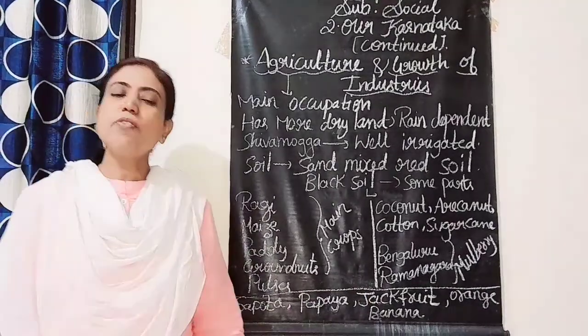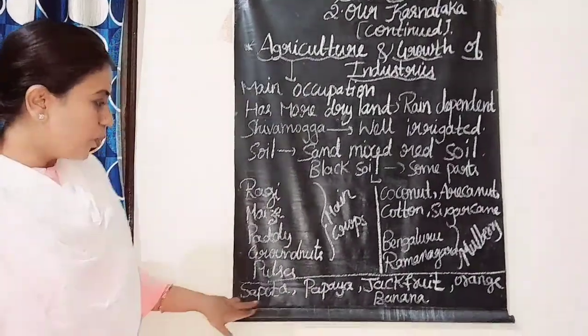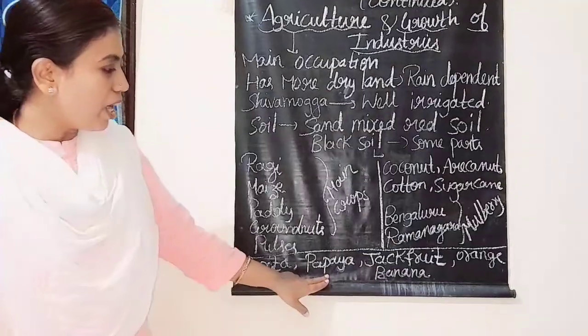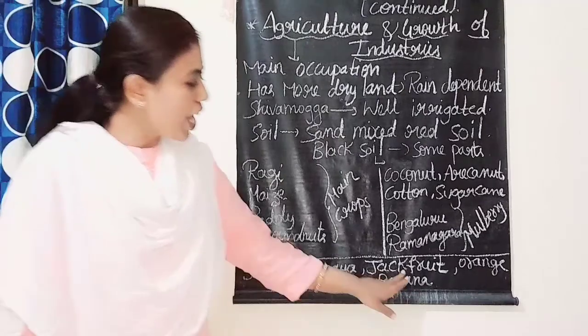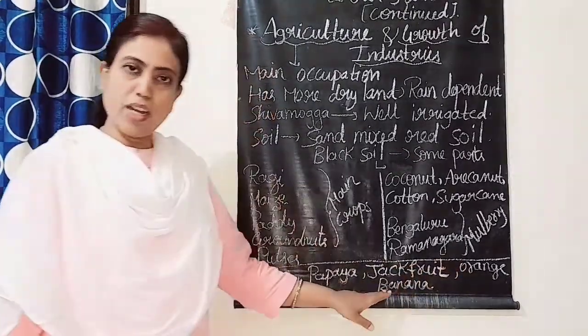Some fruits are also grown in this division, such as sapota, papaya, jackfruit, orange, and banana.